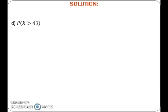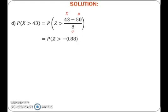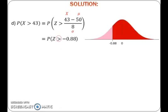To find probability of x greater than 43, first change normal distribution to standard normal distribution by using formula x minus mu over sigma. Here we get probability of x greater than 43 equals to probability of z greater than negative 0.88. After that, draw a bell-shaped graph with zero at the center. Plot negative 0.88 on the graph, draw a vertical line and shade the region of probability that we want to find. Because we want to find probability of z greater than negative 0.88, the region would be to the right of negative 0.88.